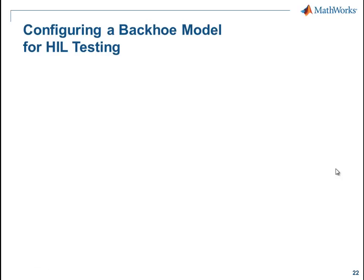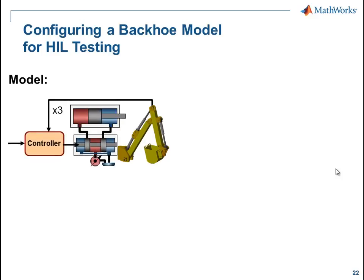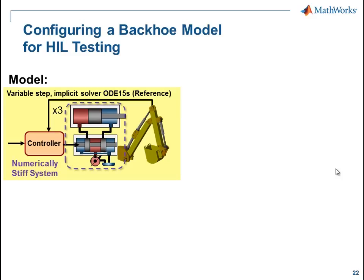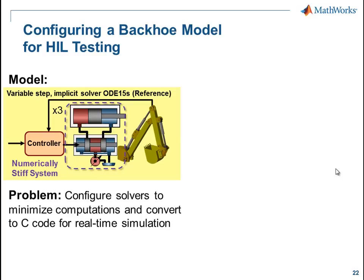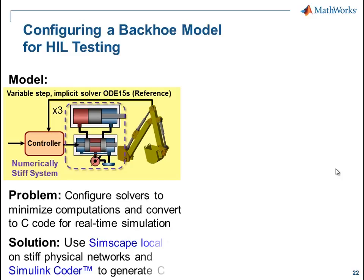In this demonstration we're going to see how we can configure a backhoe model for hardware-in-the-loop testing. We have a three-dimensional mechanical model of a backhoe connected to a hydraulic network with three hydraulic actuators. We are happy with the results from desktop simulation and wish to configure this model for hardware-in-the-loop testing. However, portions of our model are numerically stiff. We need to configure our solvers to minimize computations and run in real time, and convert this model to C code. We'll configure the solvers using the Simscape local solvers, and we'll generate C code using Simulink Coder.